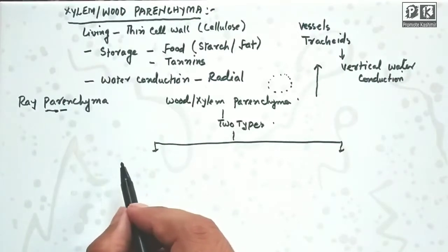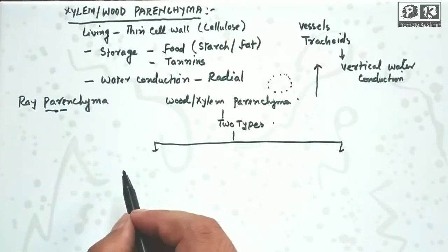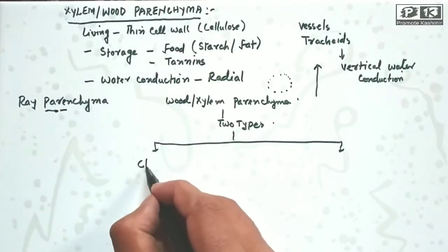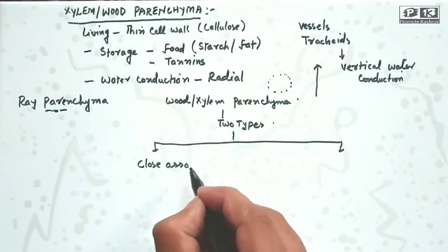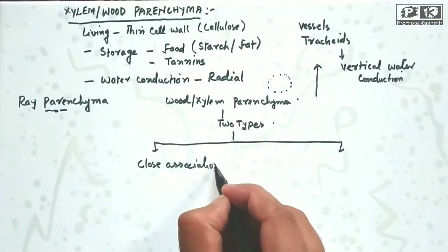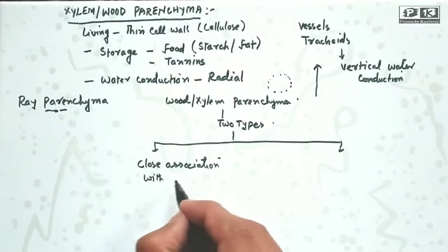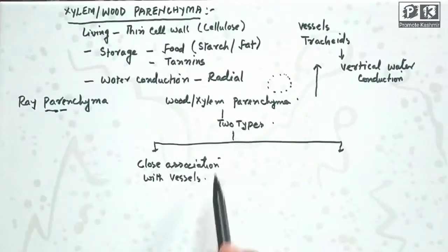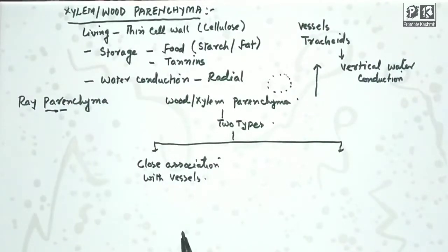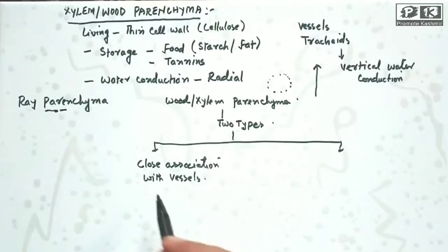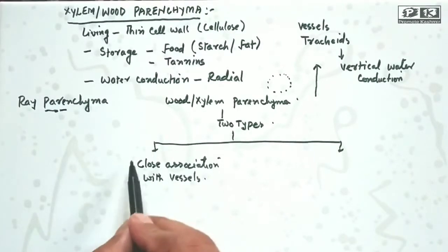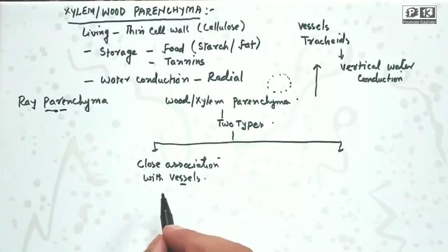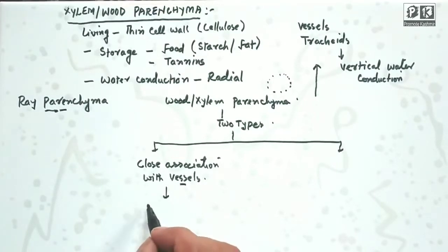Some xylem parenchyma cells show close association with vessels. If xylem parenchyma has close association with vessels, that is called paratracheal parenchyma.